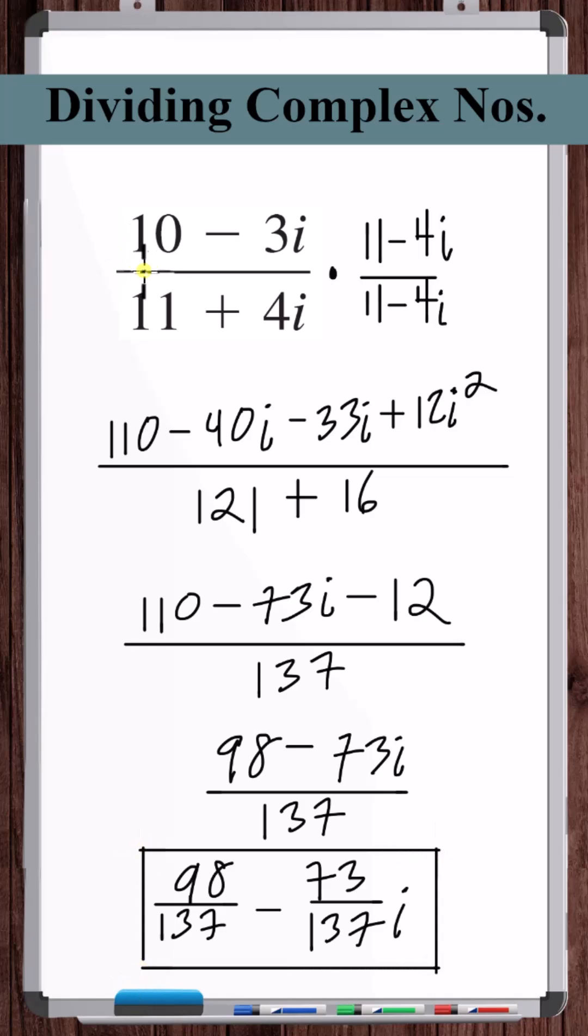If we divide the complex number 10 minus 3i by the complex number 11 plus 4i, then we get the complex number 98 over 137 minus 73 over 137i.